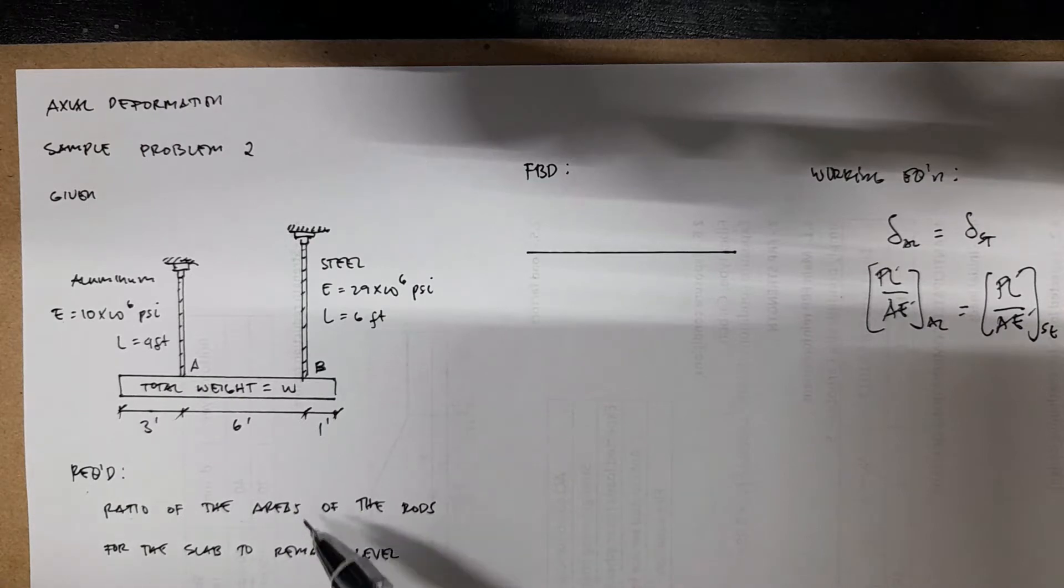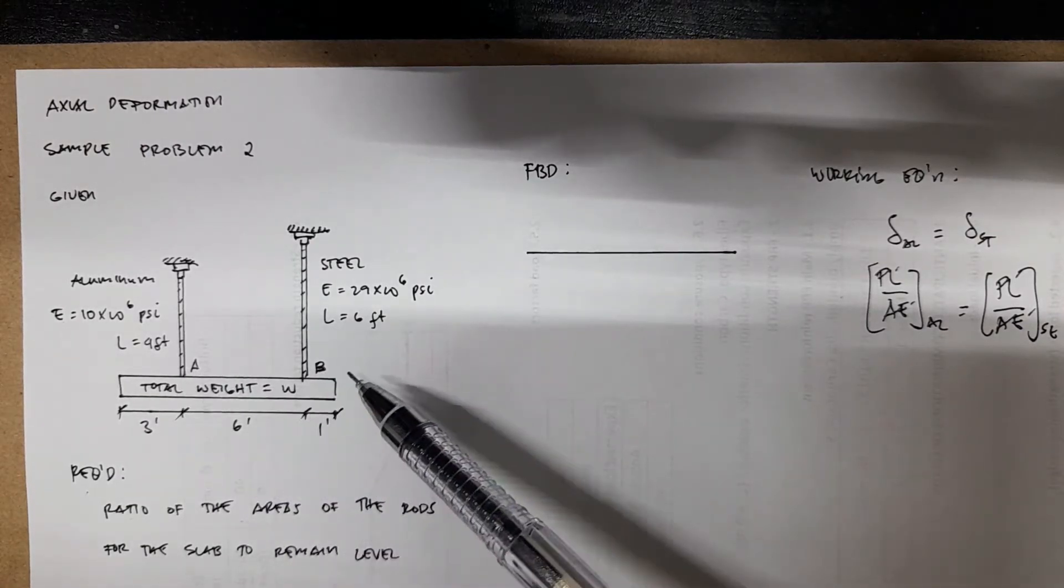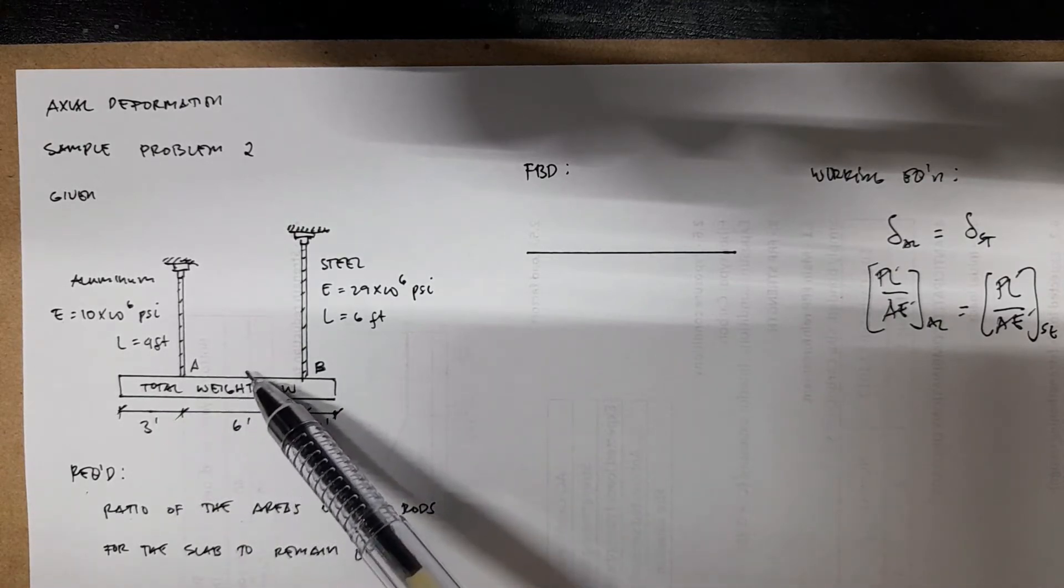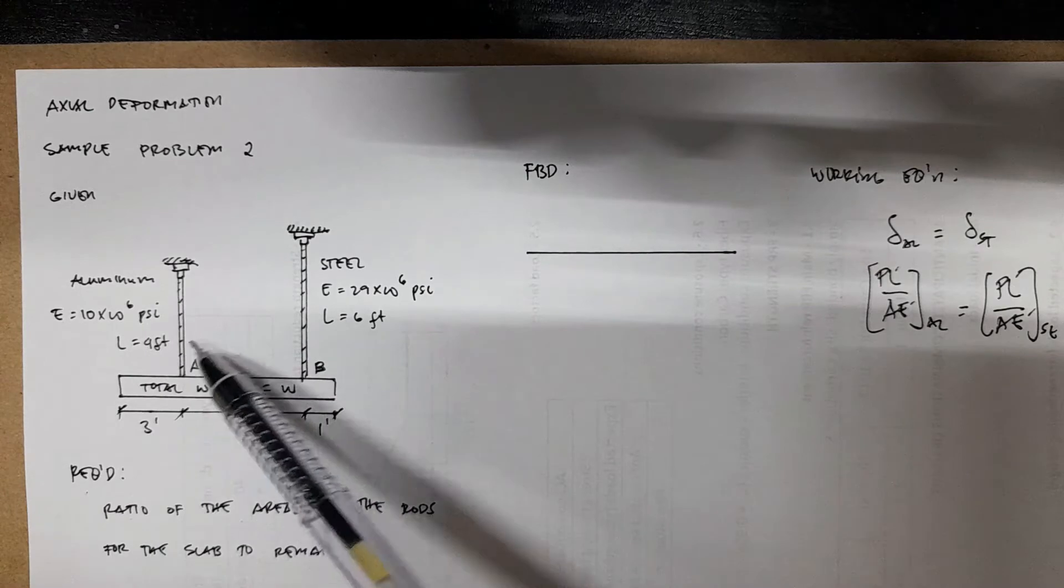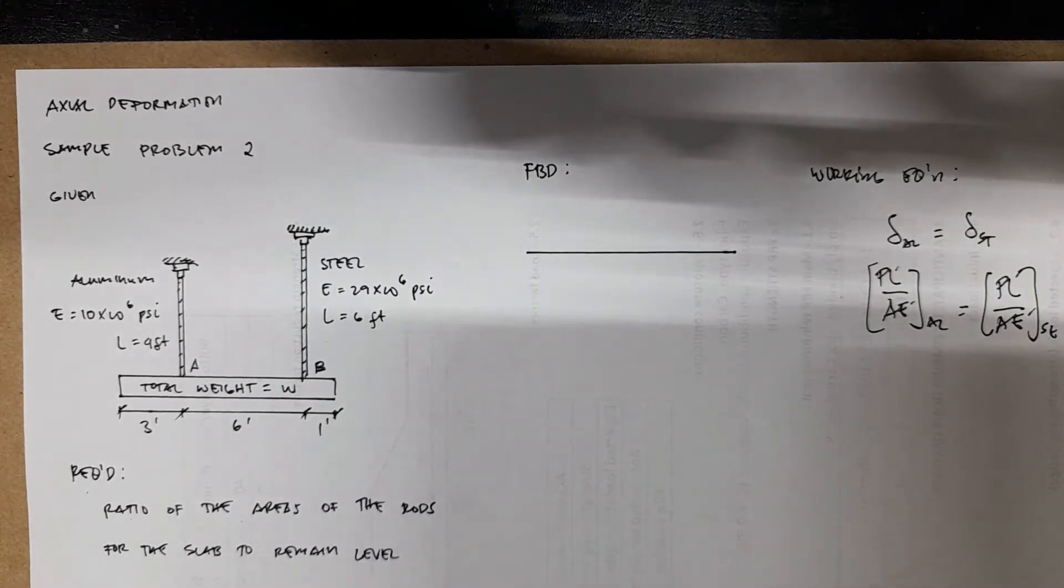That means that the deformation at point A and B have to be equal so that the slab will remain level as both of these materials will deform due to the weight of the slab.